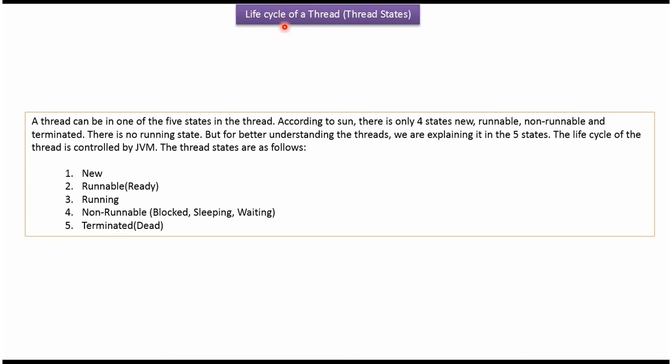In this video tutorial I will cover the life cycle of a thread. The life cycle of a thread is controlled by JVM, and the thread states are: New, Runnable, Running, Non-runnable, and Terminated.